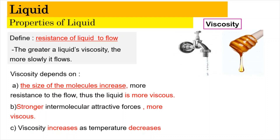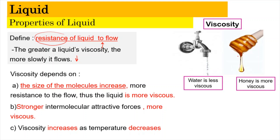The next property is viscosity, which is defined as the resistance of a liquid to flow — or 'rintangan untuk bendalir itu untuk mengalir.' The greater the liquid's viscosity, the more slowly it flows. Water from a tap is less viscous in comparison to honey. Viscosity is also dependent on the size of the molecule — when molecular size increases, there is more resistance to flow and the liquid becomes more viscous. Similarly, viscosity depends on intermolecular forces: with stronger intermolecular forces, the liquid becomes more viscous.